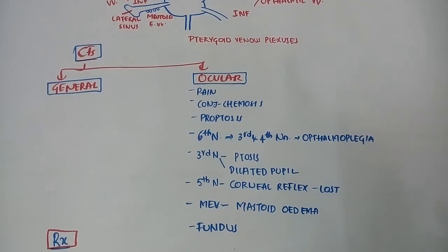Sixth nerve palsy occurs first, followed by third and fourth nerves. Corneal reflex is lost due to fifth nerve involvement. There is ipsilateral ptosis and dilated pupil due to third cranial nerve involvement.